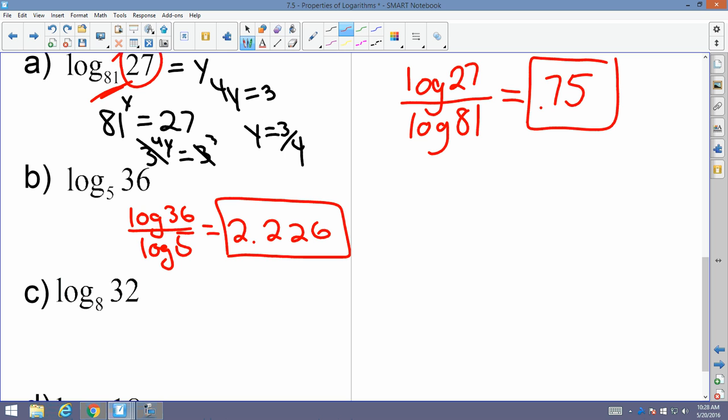How about for C? Log of 32 divided by log of 8. You've got 8 to the y equals 32. You could do this one either way, right? I could break this down to 2 to the 3y equals 2 to the 5th. Y equals 5 thirds, right? Which is 1 and 2 thirds or 1.6 repeating.